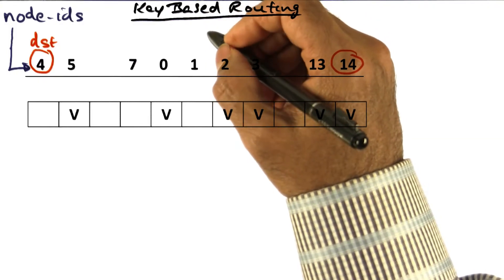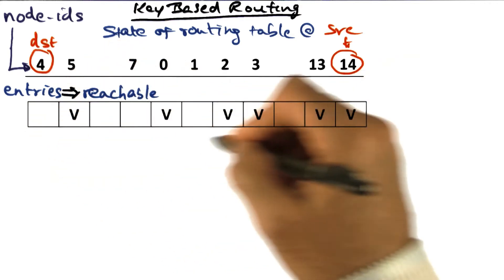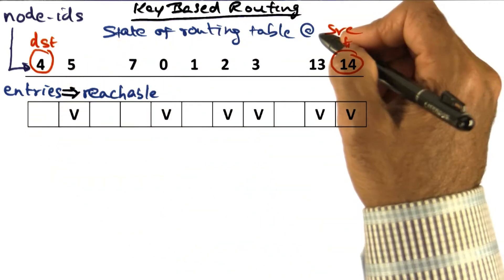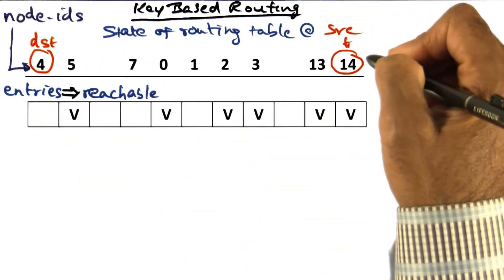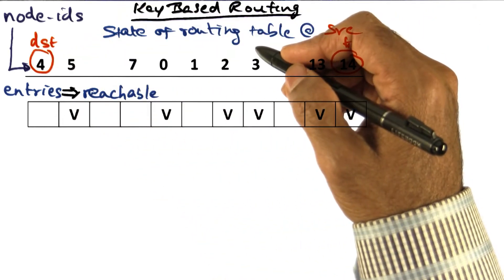Let's discuss key-based routing. First, we'll talk about the greedy approach. What I'm showing you here is the state of the routing table at the source node, which is 14, and the key I'm looking for is 4.